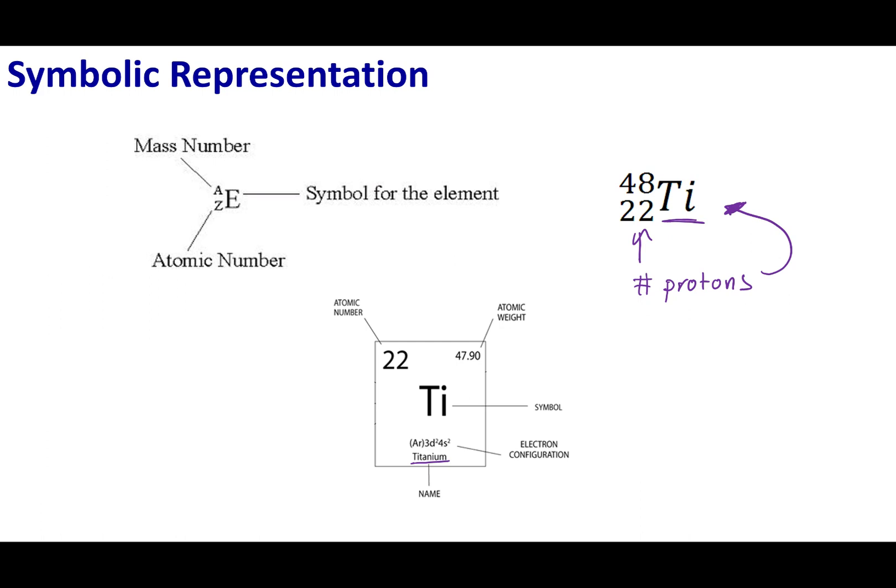What you will always see is that if you have 22 on the bottom here, it is always going to be abbreviated as Ti because 22 protons means titanium. Now, the element on the top, this is one that can vary.